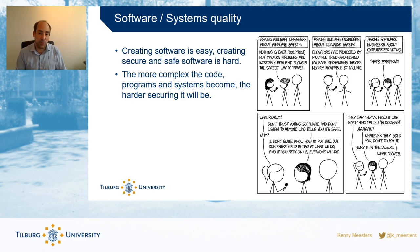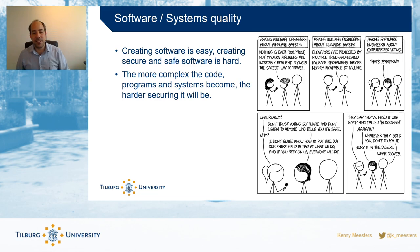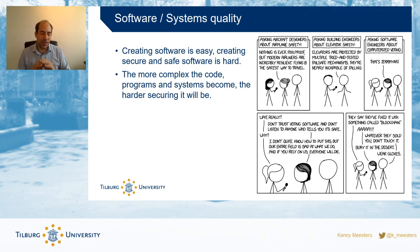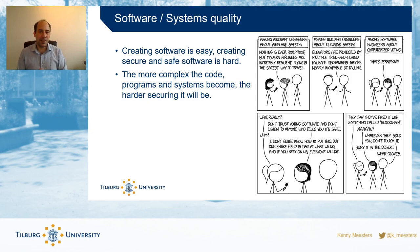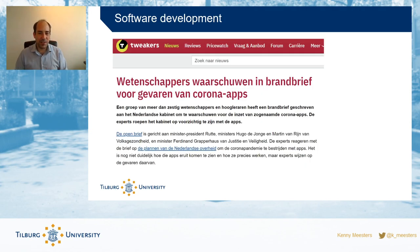As systems run longer and get expanded with new functions, the code becomes more complex and harder to make secure — the attack surface grows bigger and there are more ways to penetrate the system. There's a great xkcd comic about this: if you ask engineers about airplanes or elevators, they'll tell you they're very safe and well-engineered. But if you ask software engineers about computerized voting, they'll tell you it's terrifying — don't do it. Ironically, it's often software engineers and computer scientists who tell you it's a bad idea to use software for certain things.